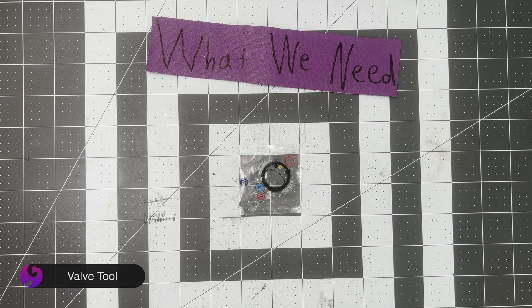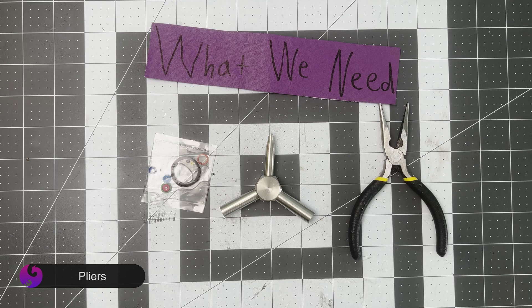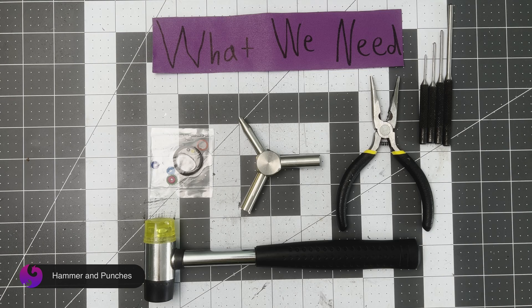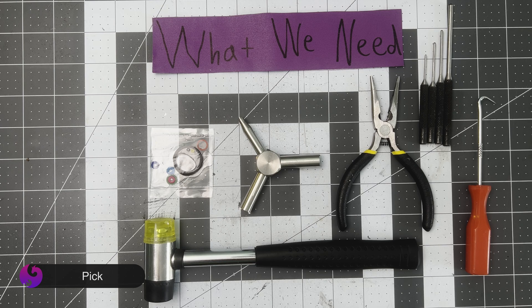The next thing we're going to need is a valve tool, which you can also buy from pluguebonearmory.com. Then pliers or something to grip with, a Phillips-head screwdriver, a pick or small tool to help remove the O-rings, and clippers.